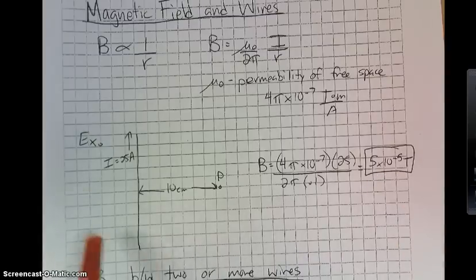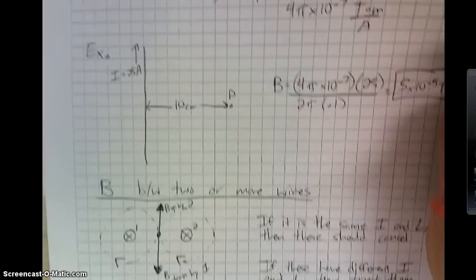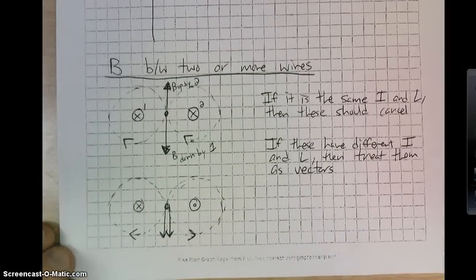Now, this is a relatively easy type of problem, just finding the magnetic field at a certain distance or radius away from the wire. Where it gets a bit more tricky is if you have to find the field between two or more wires.